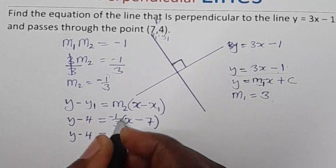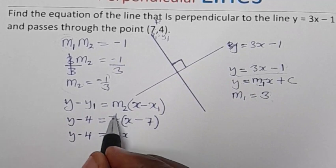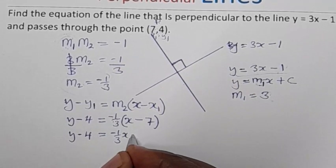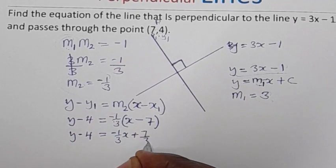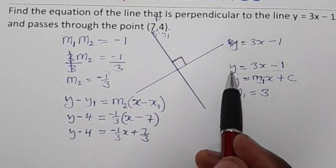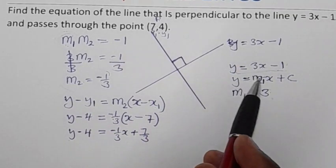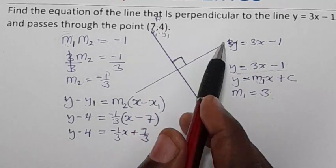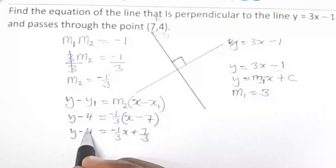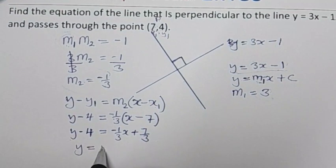Substituting into the formula: y - 4 = -1/3 × (x - 7). Expanding the right-hand side: -1/3 times x gives -1/3 x, and -1/3 times -7 gives positive 7/3. So we have y - 4 = -1/3 x + 7/3. This is the equation of the line perpendicular to the given equation.